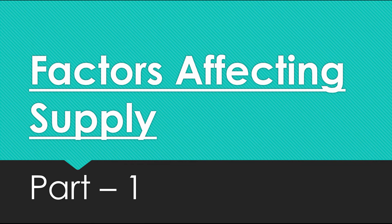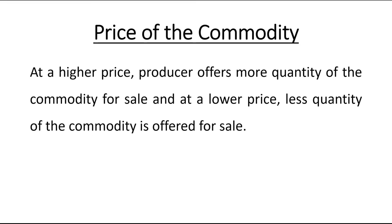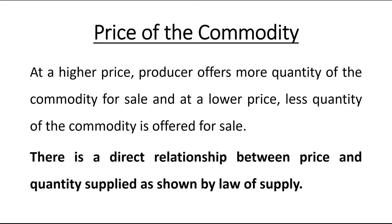Hello students, next topic is factors affecting supply, part 1. The first factor which affects supply is the price of the commodity. At a higher price, the producer offers more quantity of the commodity for sale, and at a lower price, less quantity is offered for sale. There is a direct relationship between price and quantity supplied, as shown by the law of supply.